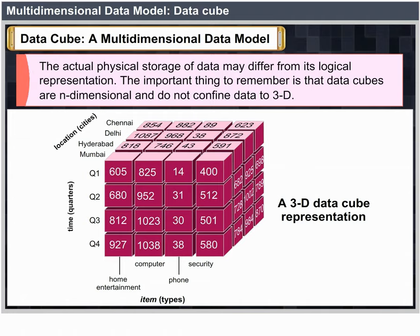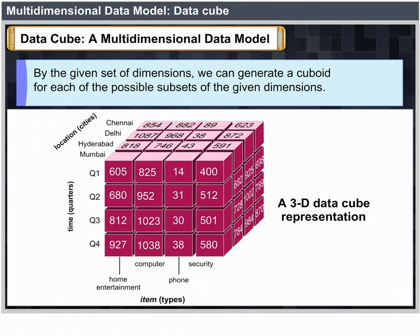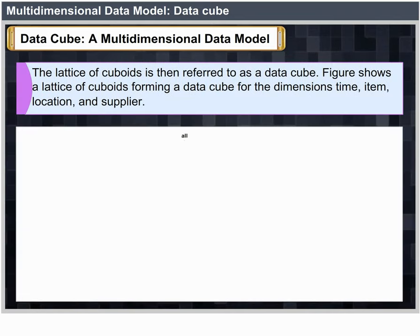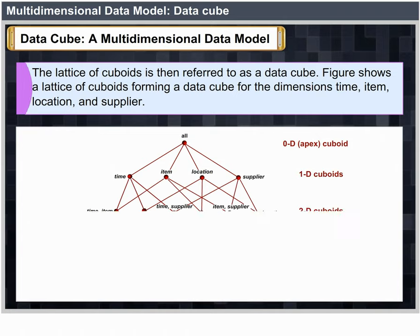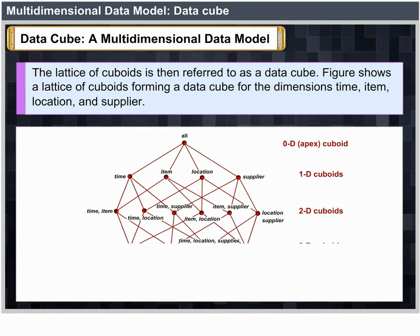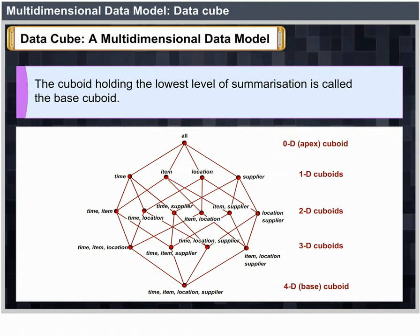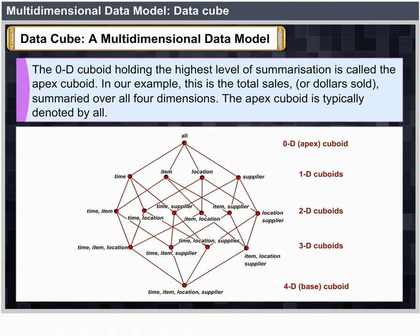The actual physical storage of data may differ from its logical representation. Data cubes are n-dimensional and do not confine data to 3D. Given a set of dimensions, we can generate a cuboid for each possible subset of the given dimensions, resulting in a lattice of cuboids — each showing data at a different level of summarization. The lattice of cuboids is referred to as the data cube. The cuboid that holds the lowest level of summarization is called the base cuboid. The 0D cuboid, which holds the highest level of summarization (e.g., total sales summarized over all four dimensions), is called the apex cuboid, typically denoted by ALL.